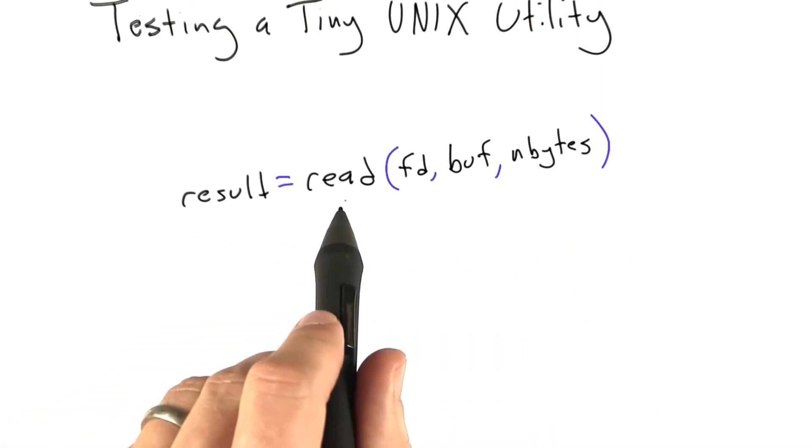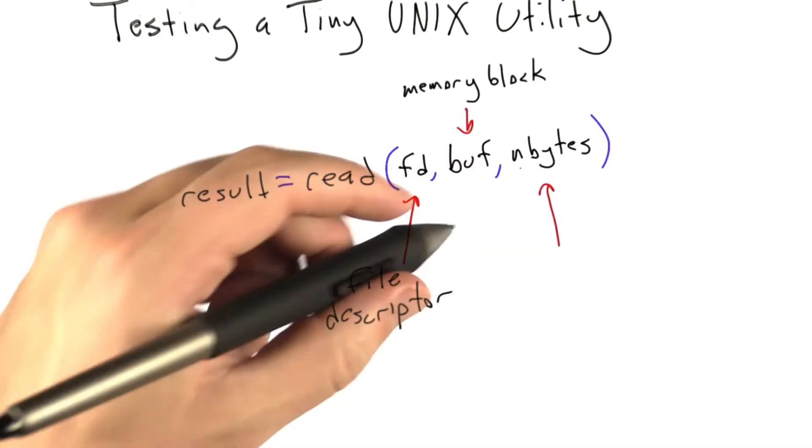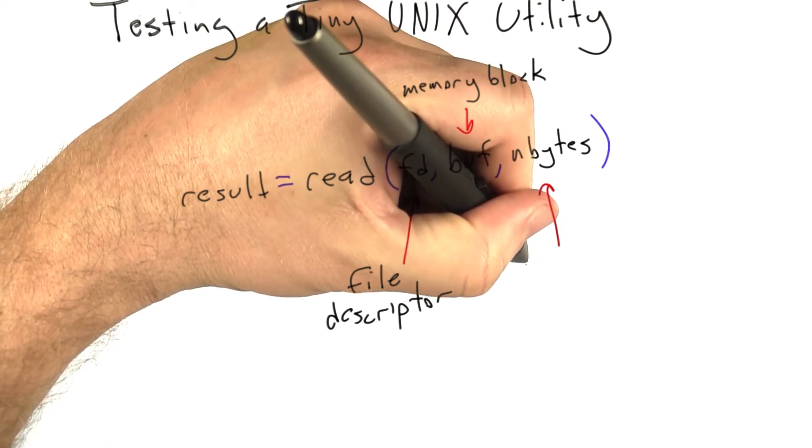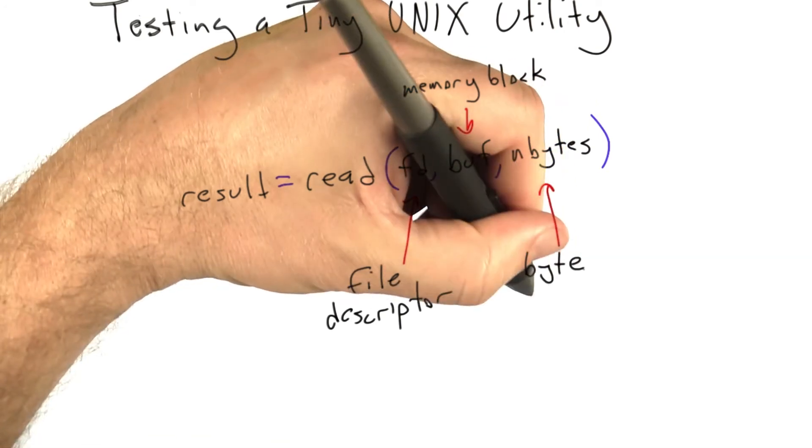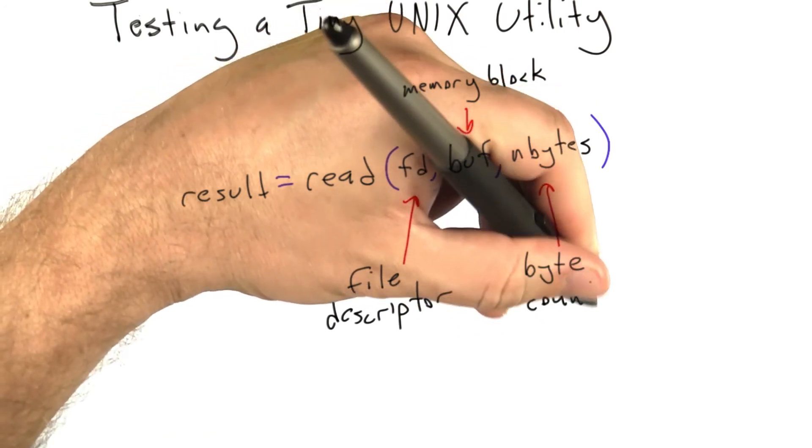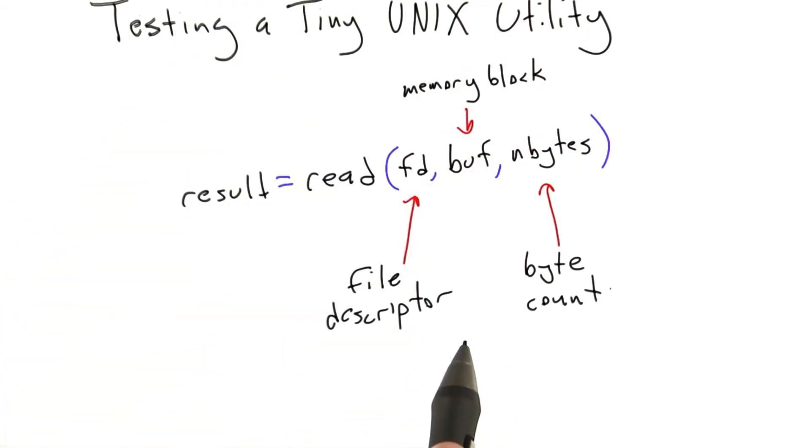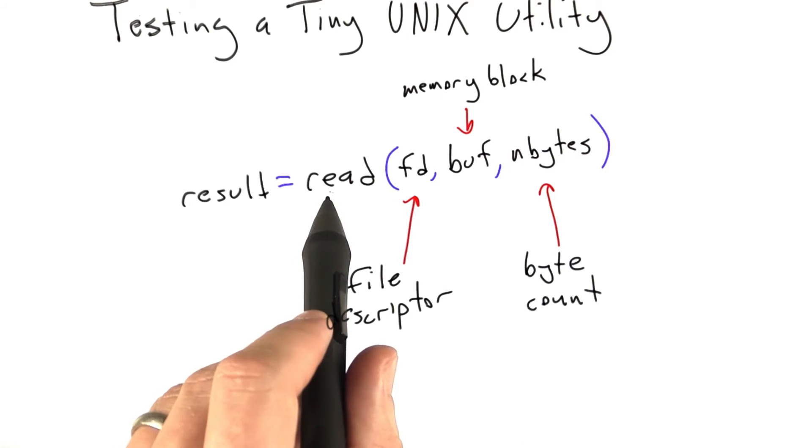The Unix read system call, as called from a C program, takes three arguments. It takes fd, which is a file descriptor. It takes buff, which is a pointer to a block of memory into which data is going to be read. And it takes a number of bytes to read from the file represented by the file descriptor into the memory block pointed to by buff.